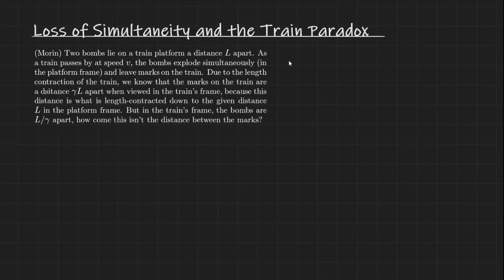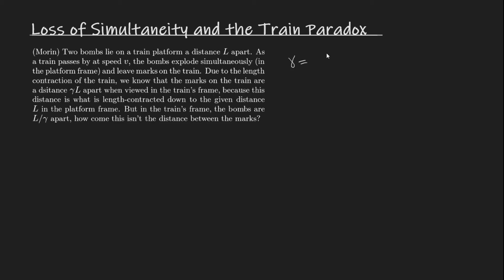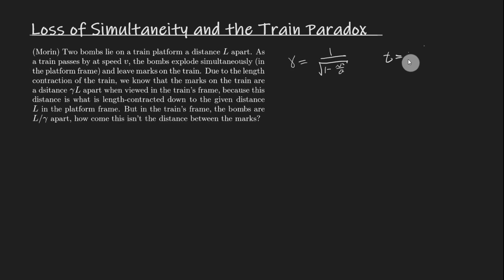If you don't know what gamma is, it's gamma equals 1 over the square root of 1 minus v squared over c squared. This factor is used a lot because time dilation gives t equals gamma times t-naught and length contraction gives L equals L-naught over gamma. This gamma factor comes up everywhere since it's part of one of the most basic aspects of special relativity.